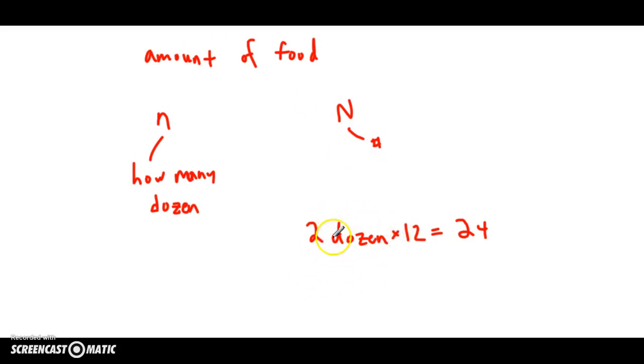Now remember, dozen, the number of dozen, we're going to call that little n. And 24, just the number of donuts you actually have, is big N. So here's our equation.